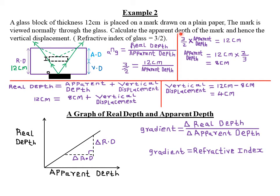For part A, we are required to calculate the apparent depth. The refractive index, as the ray moves from air to glass, equals real depth over apparent depth. Refractive index of glass is given as 3 over 2. Therefore, 3 over 2 equals the real depth, which is 12 centimeters, divided by the apparent depth. To find the apparent depth, multiply both sides by the apparent depth: 3 over 2 multiplied by apparent depth equals 12 centimeters. Multiply both sides by the reciprocal 2 over 3, so apparent depth equals 12 centimeters times 2 over 3. 3 into 12 is 4, 4 times 2 gives 8 centimeters as our apparent depth.